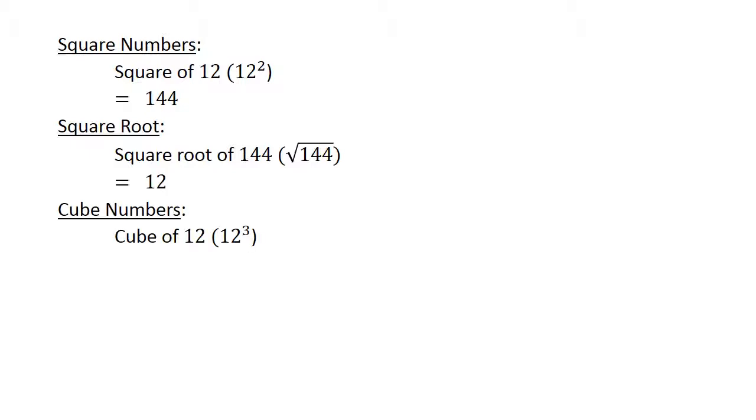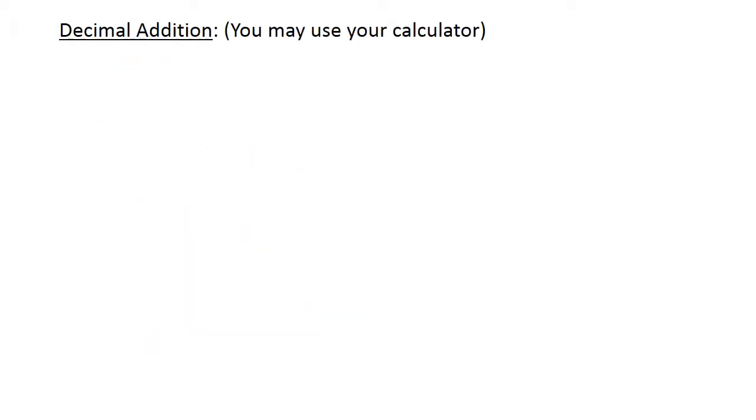Square numbers: The square of 12 equals 144. The square root of 144 equals 12. The cube of 12 equals 1728, and the cube root of 1728 equals 12. Decimal addition: 14.85 plus 12.27 equals 27.12. Check all answers with your calculator.